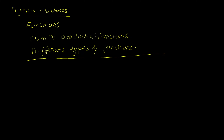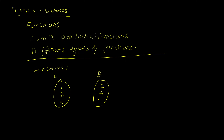So what are functions? This should be a concept we already know. Functions are essentially a mapping from an input space into an output space, and that mapping needs to have certain properties. Since this is discrete structures, we'll approach functions using discrete sets. So let's imagine there's a set A with elements one, two, and three, and another set B with elements two, four, and six.